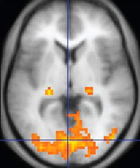The contrast between different tissues is determined by the rate at which excited atoms return to the equilibrium state. Exogenous contrast agents may be given to the person to make the image clearer. The major components of an MRI scanner are the main magnet, which polarizes the sample, the shim coils for correcting shifts in the homogeneity of the main magnetic field, the gradient system which is used to localize the MR signal, and the RF system, which excites the sample and detects the resulting NMR signal. The whole system is controlled by one or more computers.